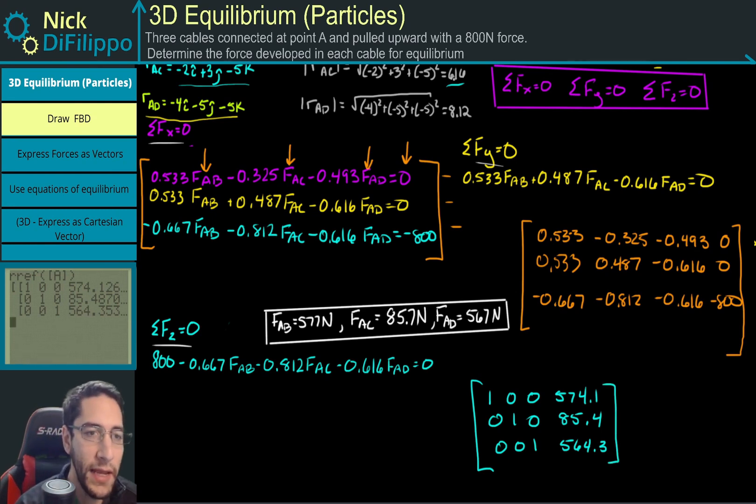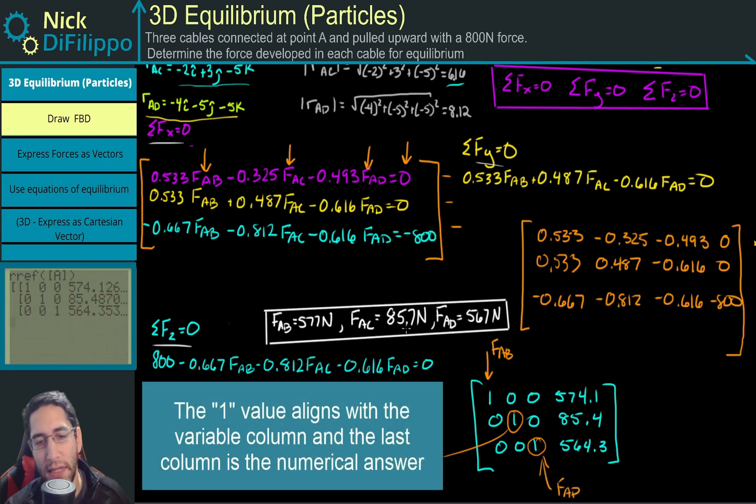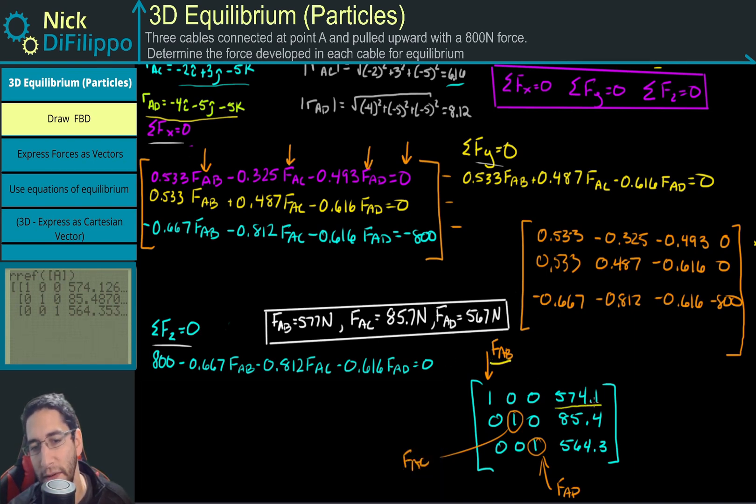This first row is FAB, the second one is FAC, and the third row is FAD. Let's look at these values. It might be a little off because of rounding, but for FAB I get 574.1, and when we did our back substitution we got 577. For FAC we get 85.7 here, I get 85.4. And for FAD I get 567 here, 564.